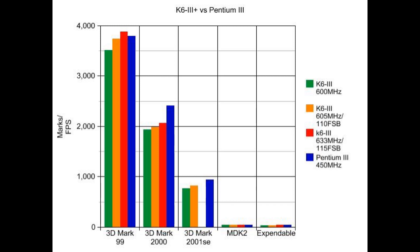The one time the K6-3 Plus actually overcame the Pentium 3 was at the highest overclock — 633 MHz with a 115 MHz front side bus — and that was in 3DMark 99, where it did beat the Pentium 3 by a little bit. But that's a significant overclock that most users wouldn't commonly achieve stably. I wasn't able to run everything completely stable at that level, so it's the only instance where it came out ahead.